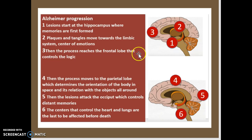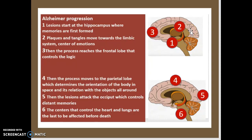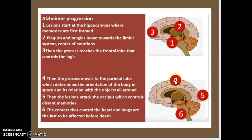When it comes to the progression of Alzheimer's through the brain, lesions start at the hippocampus, which is generally where memories are first formed — this is why the person won't have a good memory at the beginning. The second area affected is the plaques and tangles moving toward the limbic system and the center of emotions, which will tamper with the person's personality and characteristics. Thirdly, it will eventually reach the frontal lobe, which is responsible for logical thinking. Number four, it will reach the parietal lobe, which determines the orientation of the body in space and its relation to the objects around it.